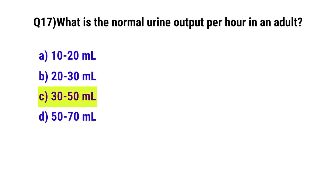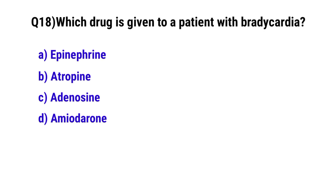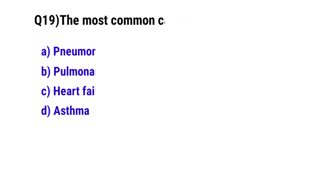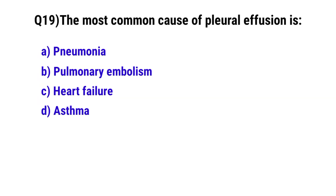Question number 18: Which drug is given to a patient with bradycardia? The correct option is B: Atropine. Question number 19: The most common cause of pleural effusion is? The correct option is C: Heart failure.